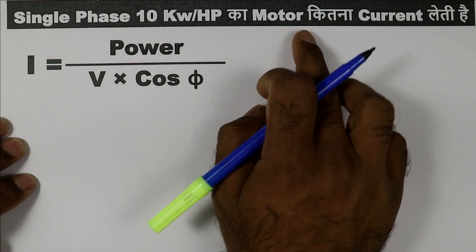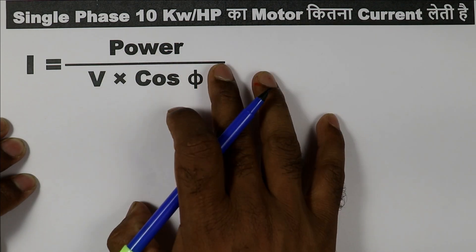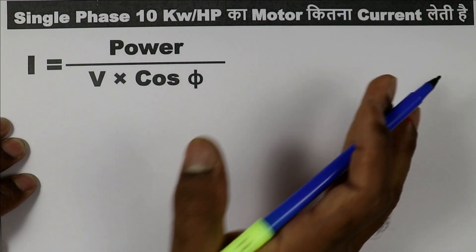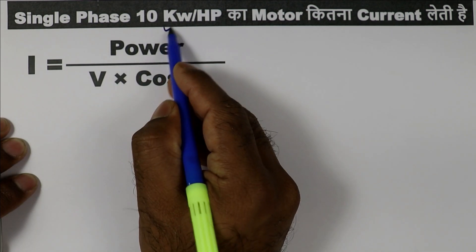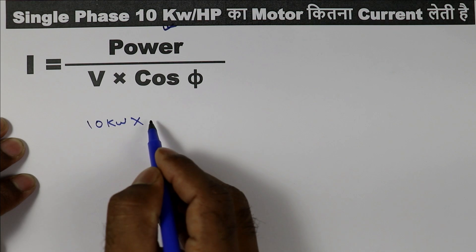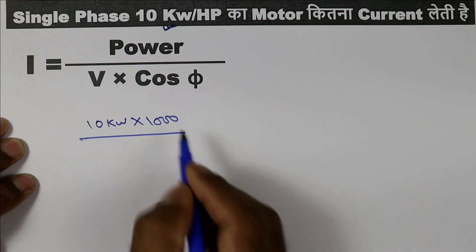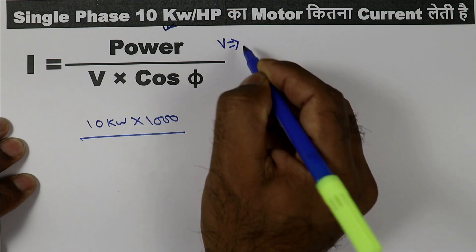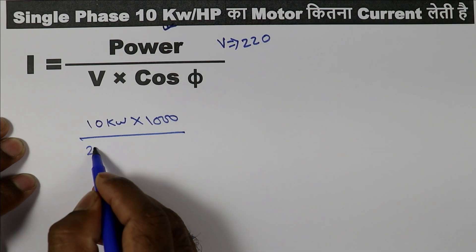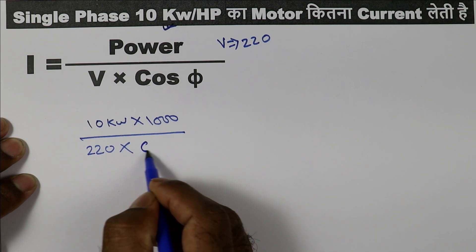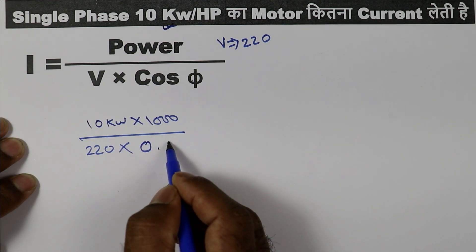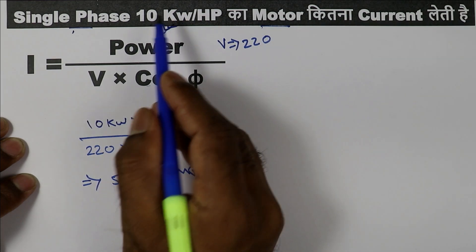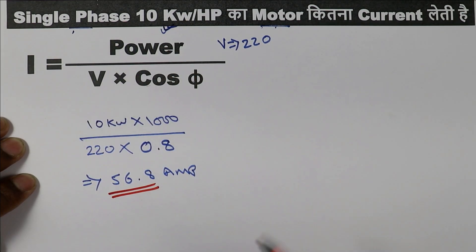Now, if you were asked the current rating for single phase, you have to use a different formula — the same structure but without root 3. For a 10 kilowatt single-phase motor, multiply 10 kW by 1000 to convert to watts, then divide by voltage. If voltage is not given, assume 220V for single phase. Multiply by power factor — assume 0.8 if not given. When you solve this, you get 56.8 ampere as the current rating of a 10 kW single-phase motor.